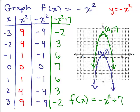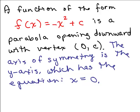When a constant c is added to -x², the vertex is still (0, c) but the minus sign means the parabola opens downward. The axis of symmetry is still the y-axis — that happens when there's no x term, only an x² term and a constant. So: f(x) = -x² + c is a parabola opening downward, vertex (0, c) which is also the y-intercept, and axis of symmetry x = 0.